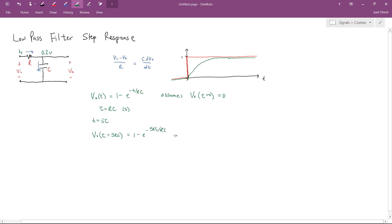I'm going to get out my calculator and I'm going to determine that 1 minus e to the minus 5 is 0.993. So we will have charged basically all the way by about 5 time constants.